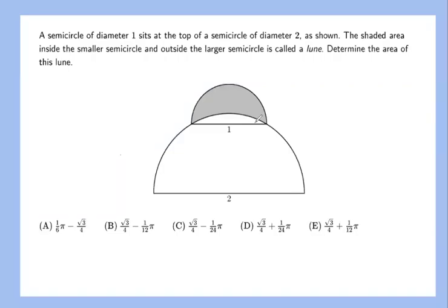We have another geometry problem, a funky area problem. We have a semicircle of diameter one, which is given right here as part of the semicircle of diameter two. So there's a semicircle right here and another semicircle. This has diameter of one, this has diameter of two.